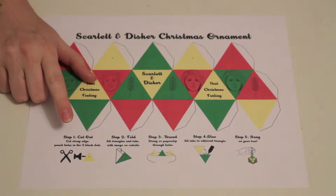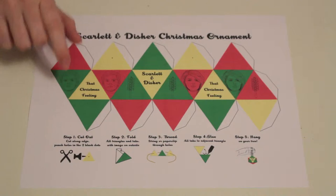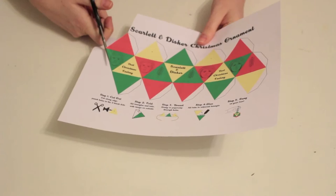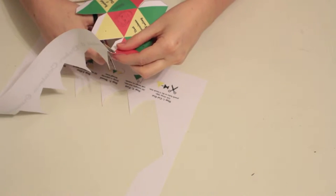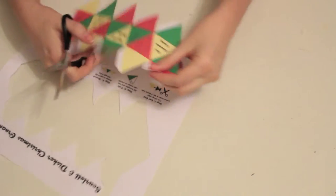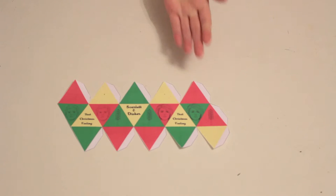Step 1: Cut out the image. Start by cutting the whole shape along the edge. Make sure you cut around the white tabs on the edges, as you'll need those to glue the ornament together. When you're finished, it should look something like this.